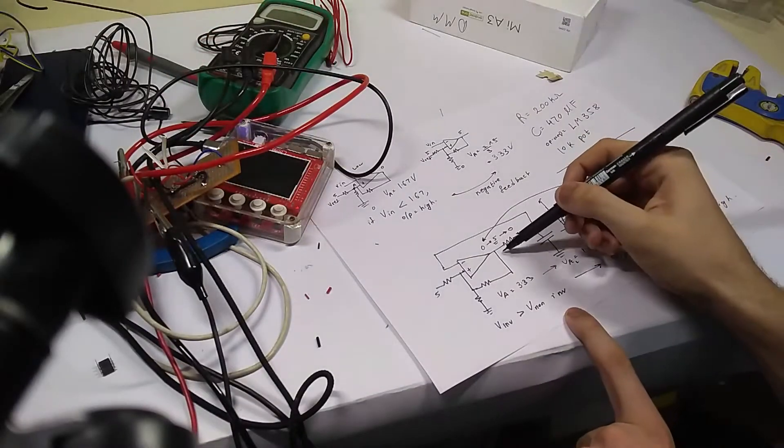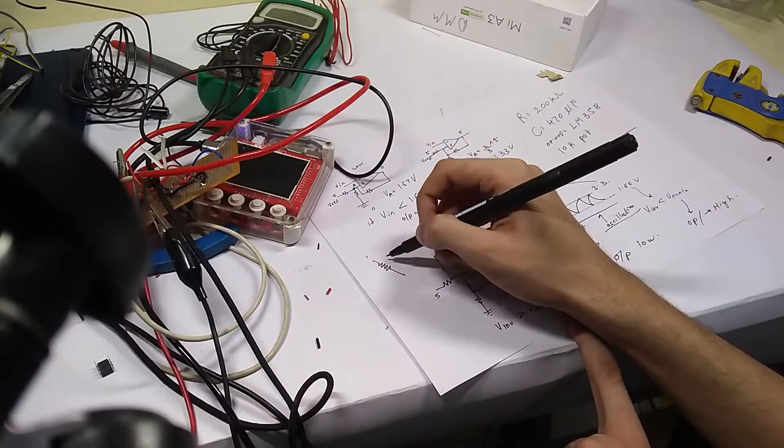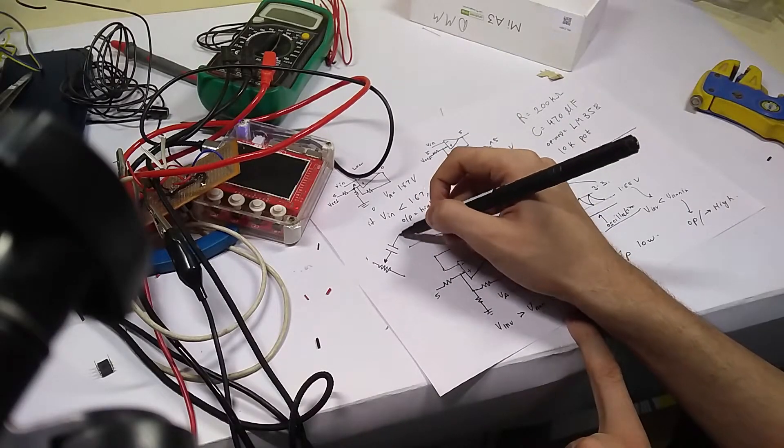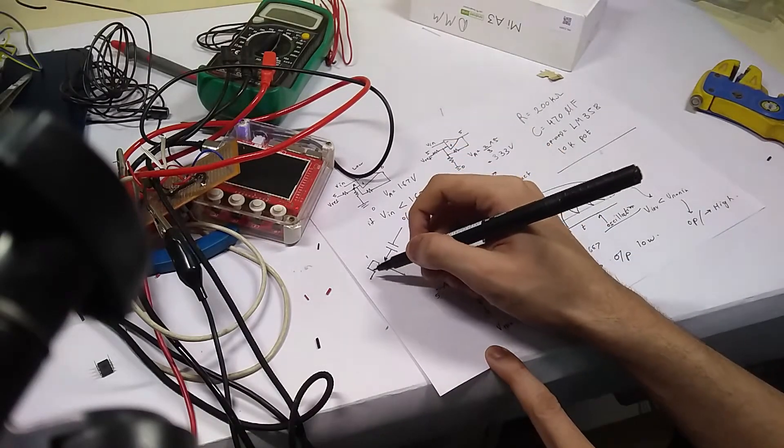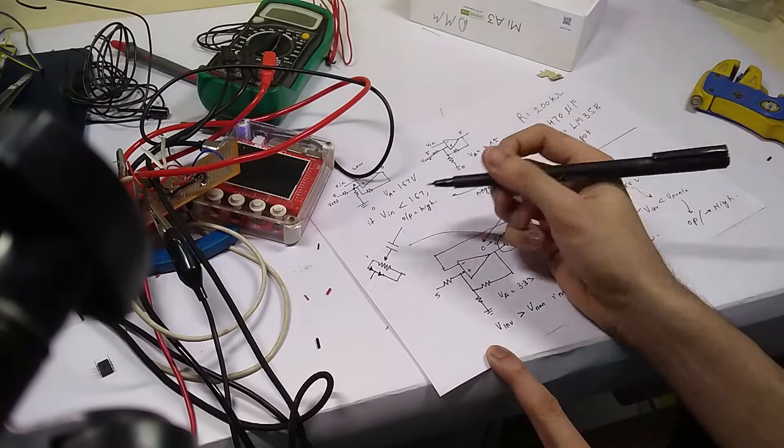At the moment, the duty cycle of the PWM depends only on this single resistor. Instead of this single resistor, we may replace it with a potentiometer with two diodes. The two diodes will ensure that the current can only charge the capacitor through one way and discharge only through the other.